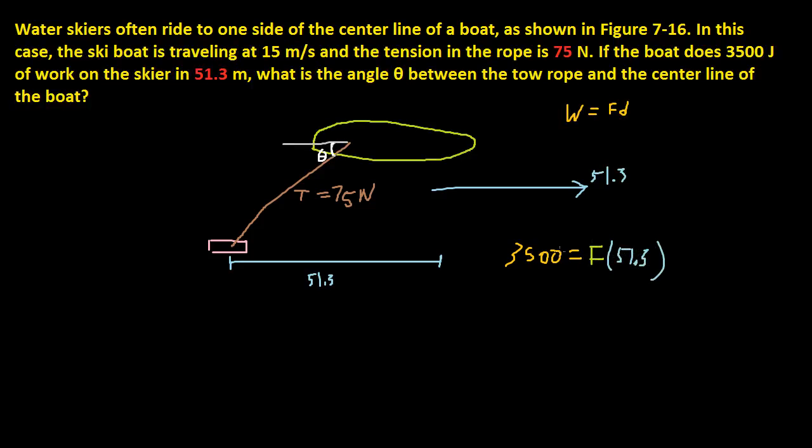Well, if you divide 3,500 by 51.3, you get, let me just do it on my calculator real quick. You get 68.226 as the force that's going horizontally, so I'm just going to label that as X.